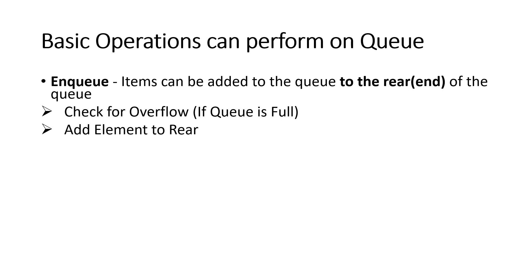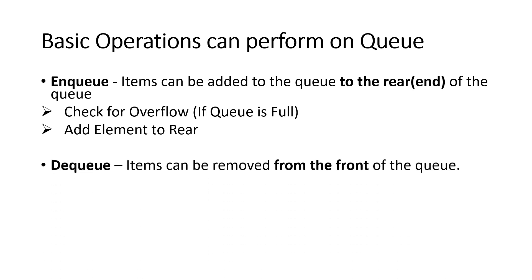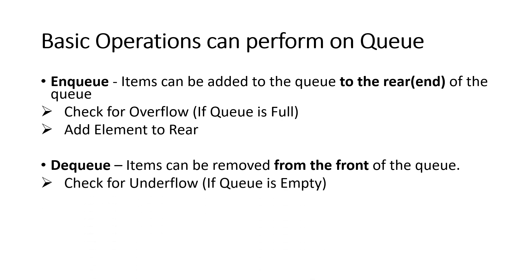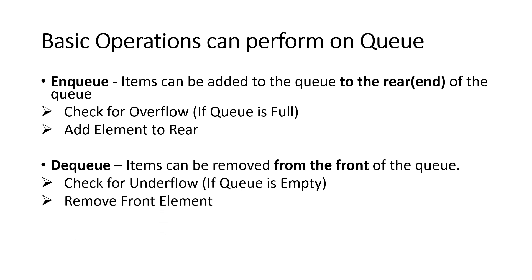The second operation is Dequeue. It means delete an element from the queue by using the front pointer. Before deletion, we have to check for underflow condition. If the queue is empty, we cannot delete an element from the queue.